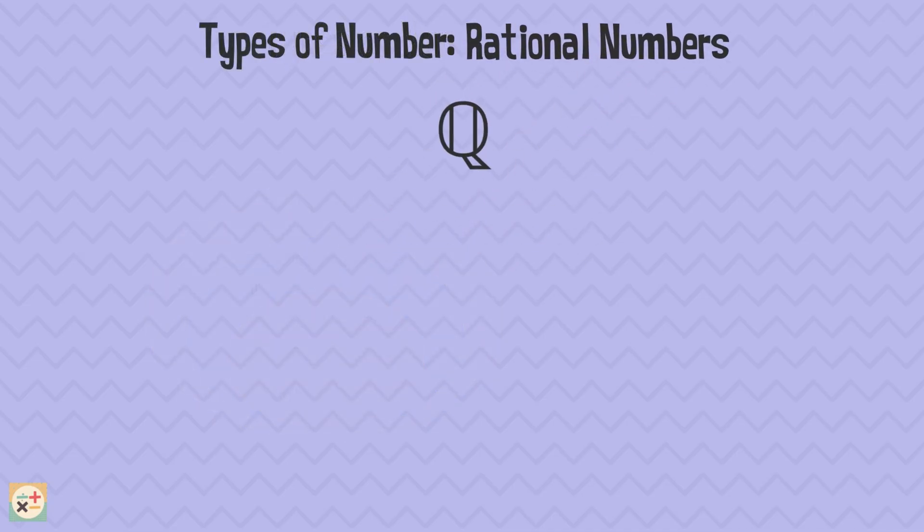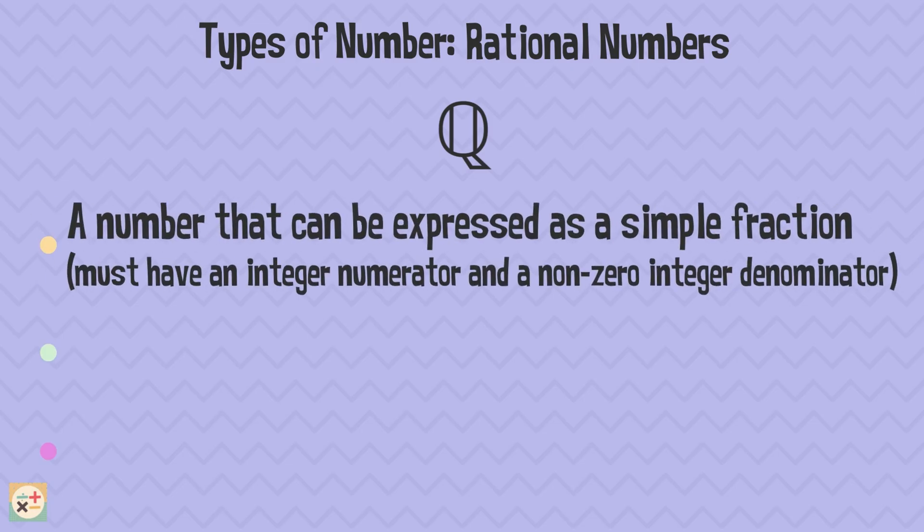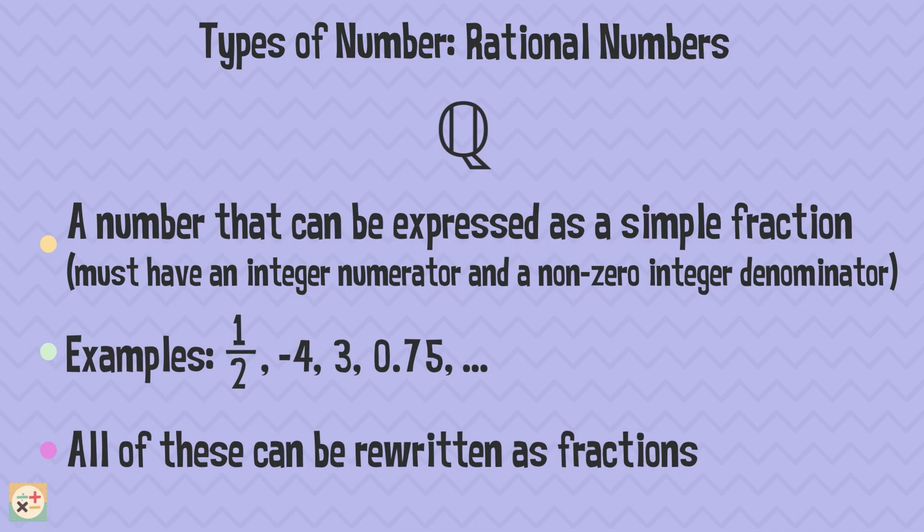Now, things get a bit more interesting with rational numbers. A rational number is any number that can be written as a fraction, where both the numerator and denominator are integers, and the denominator isn't zero. So, one-half, 0.75, and even integers like 3, which is the same as 3 over 1, are all rational numbers.